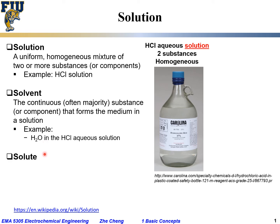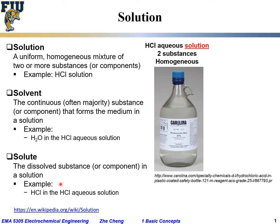For the HCl solution example, water H₂O would be the solvent — it makes sense, as quite often people use water as a solvent for many things. Another related concept is solute: the dissolved substance or dissolved component in a solution. It is quite often the non-continuous substance. For this HCl solution example, HCl — hydrogen chloride — would be the solute, and quite often HCl would be present in much lesser quantity than the solvent, water.